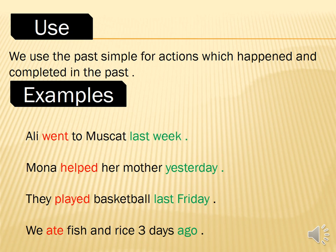Mona helped her mother yesterday — Mona ساعدت والدتها أمس. They played basketball last Friday — هم لعبوا كرة السلة الجمعة الماضية. We ate fish and rice three days ago — أكلنا سمك وأرز قبل ثلاثة أيام. The words in green are time markers that indicate the past tense.